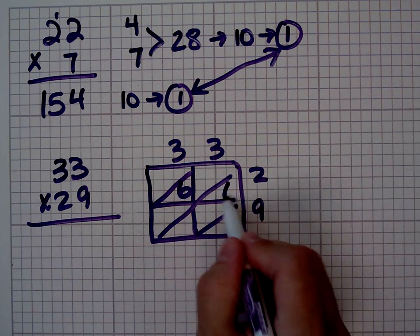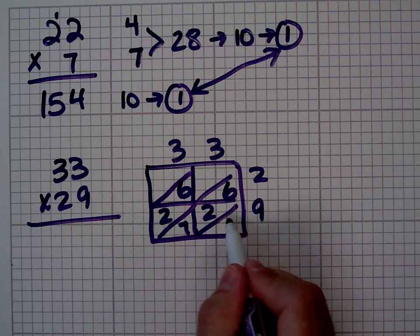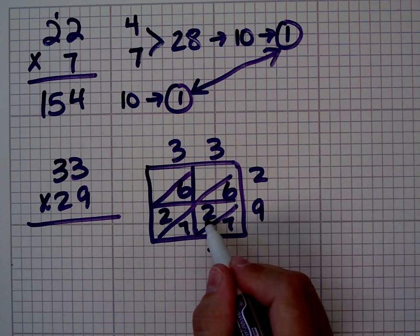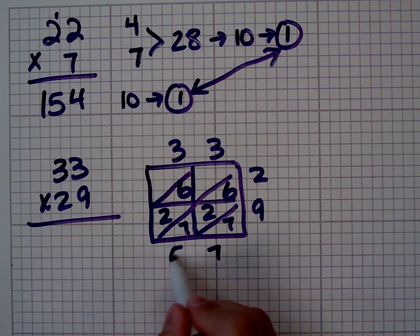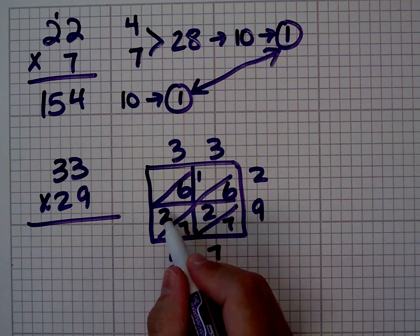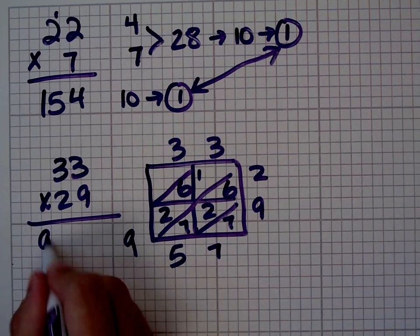3 times 2 is 6, 3 times 2 is 6, 3 times 9 is 27, 3 times 9 is 27. 7, 6, I'm sorry, 7 and 2 is 9, 9 and 6 is 15, and 6 and 2 is 8, and 1 is 9. So my answer is 957.